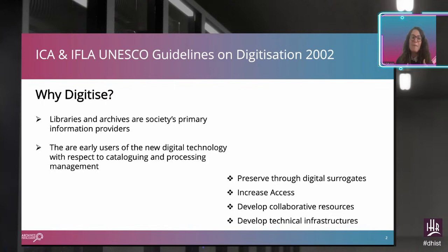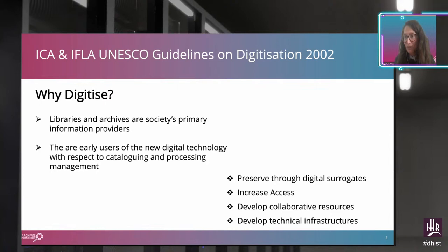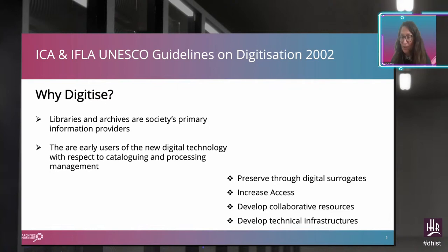The 2002 report correctly identified that libraries and archives have always been the primary information providers — holders of all the knowledge of humanity ever created. They were also early adopters of digital technology, because information technology changed things particularly for archives and libraries; this is really where the digital revolution was probably felt the most. The report asked why digitize: to preserve digital surrogates, increase access, develop collaborative resources, and develop technical infrastructure. But it was still very much in its infancy.